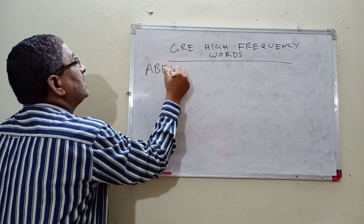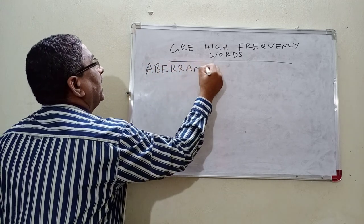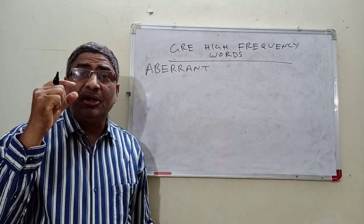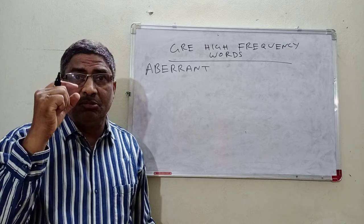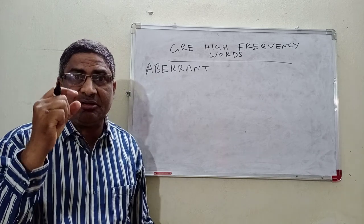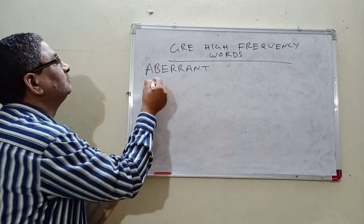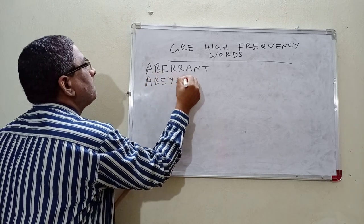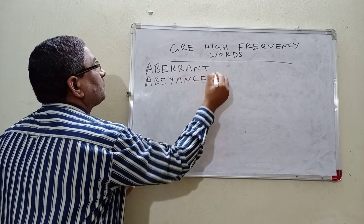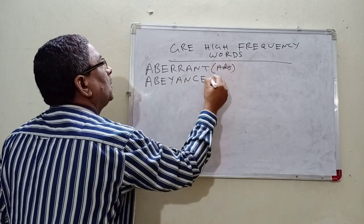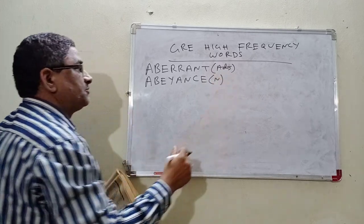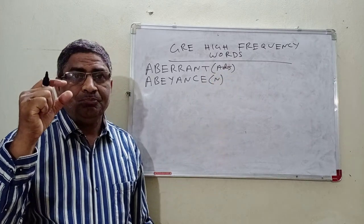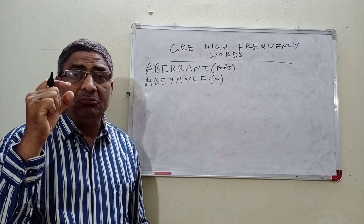Aberrant. What is the meaning of Aberrant? Aberrant means abnormal, something which is not normal. It is an adjective. The noun form is Abeyance. What is Abeyance? Suspended action — an action which is kept in the state of suspension. A synonym is 'on tenterhooks.'